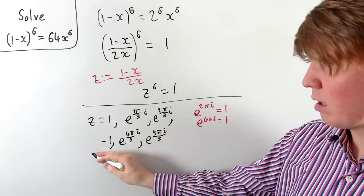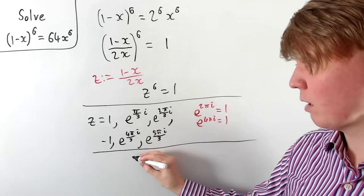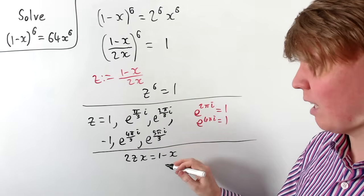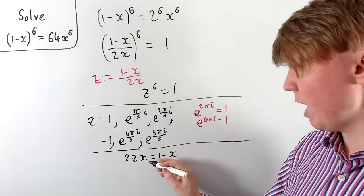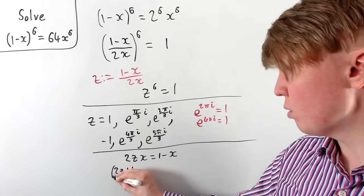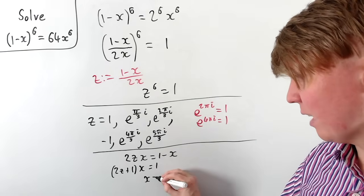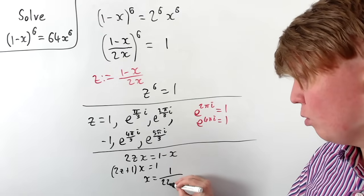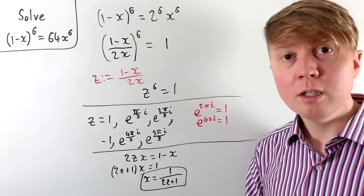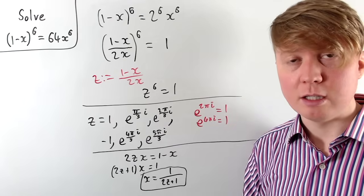Now we rearrange z equals (1 minus x)/(2x) to find x in terms of z. Multiplying both sides by 2x gives 2zx equals 1 minus x. Gathering x terms: (2z plus 1) times x equals 1. Dividing by (2z plus 1) gives x equals 1 over (2z plus 1). We now substitute each of our 6 values of z into this formula to find the 6 solutions for x.